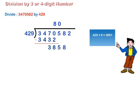429 multiplied by 9 is equal to 3861. 429 multiplied by 8 is equal to 3432. 3861 is greater than 3858 and 3432 is less than 3858. Therefore, 429 is contained in 3858 eight times. We write the digit 8 on the right of 80 in the quotient and subtract 3432 from 3858. 3858 minus 3432 is equal to 426. So, the remainder this time is 426.